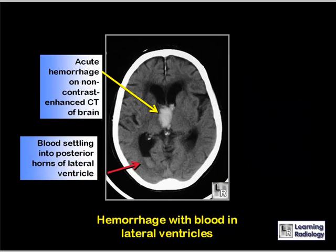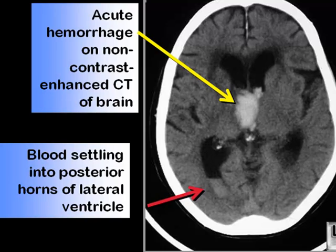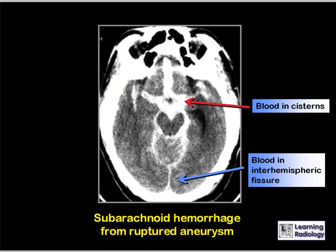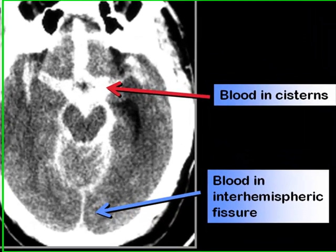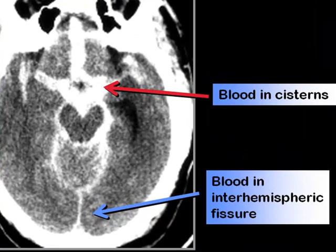This is an example of hemorrhage with blood in the lateral ventricles. The yellow arrow points to acute hemorrhage on non-contrast CT, and the red arrow shows blood settled into the posterior aspect of the occipital horns of the lateral ventricles. This is an example of subarachnoid hemorrhage from a ruptured cerebral aneurysm — the red arrow points to blood in the cisterns, the blue arrow to blood in the interhemispheric fissure. Blood in the cisterns, fissures, and sulci should make you think of subarachnoid hemorrhage.